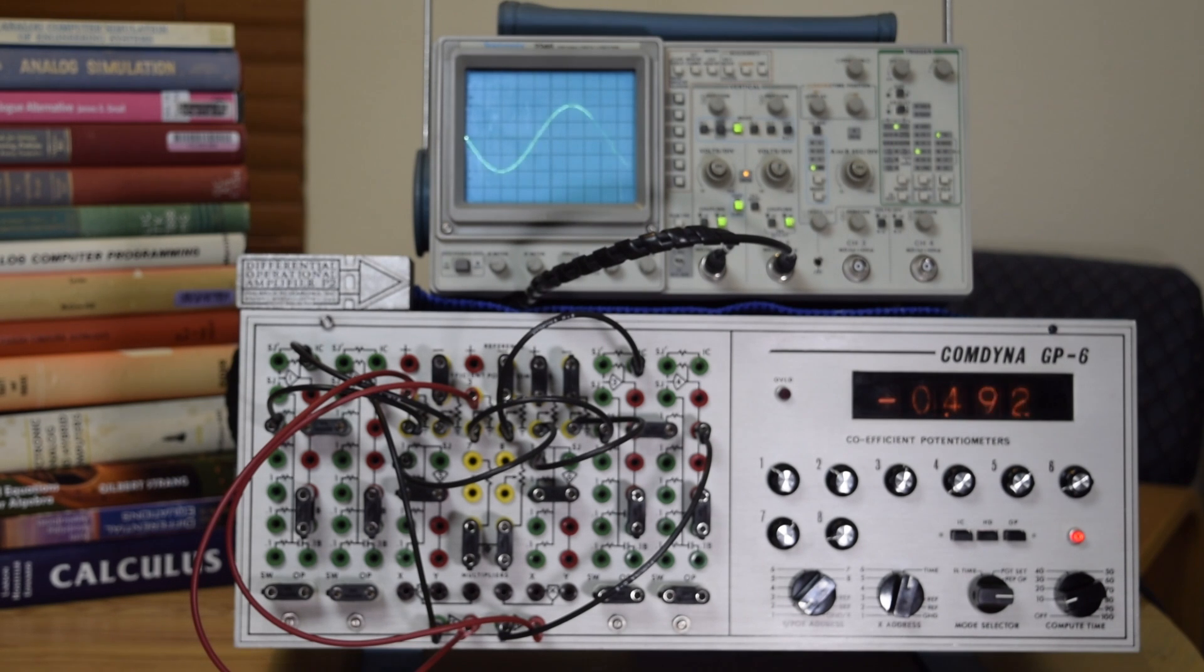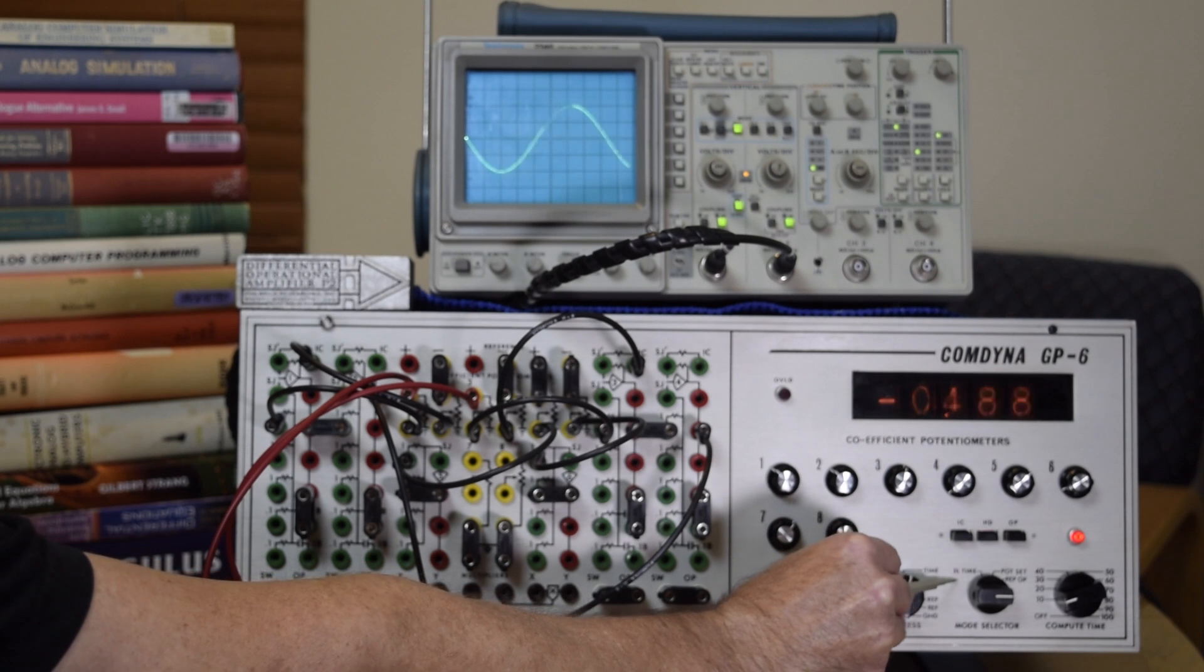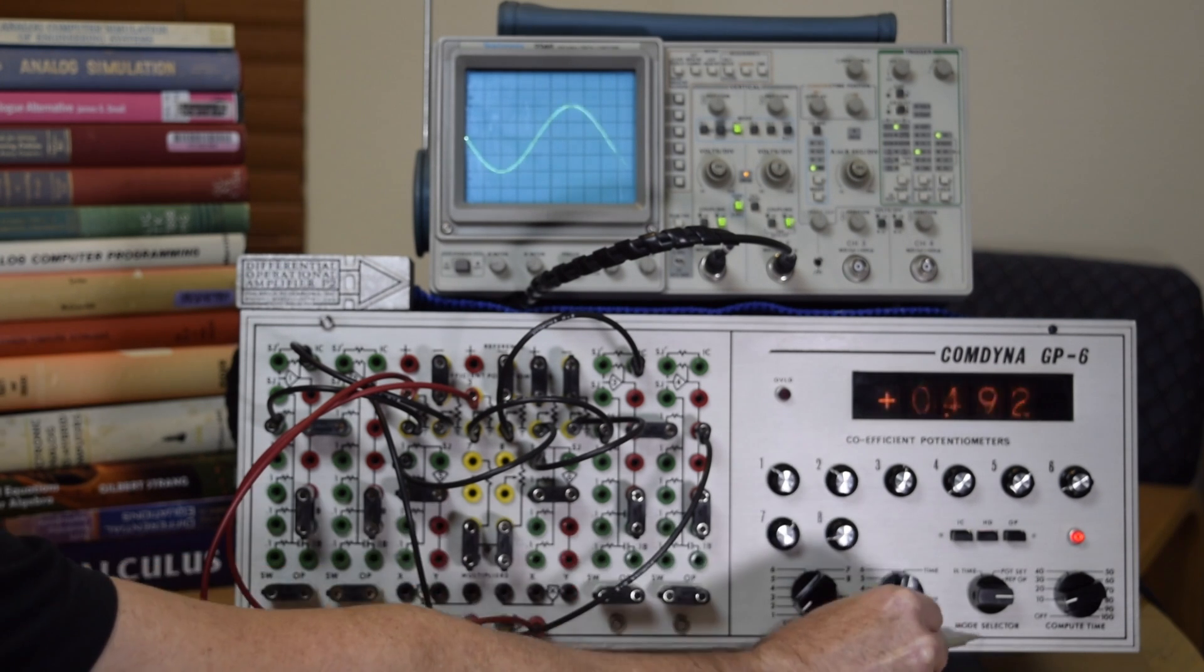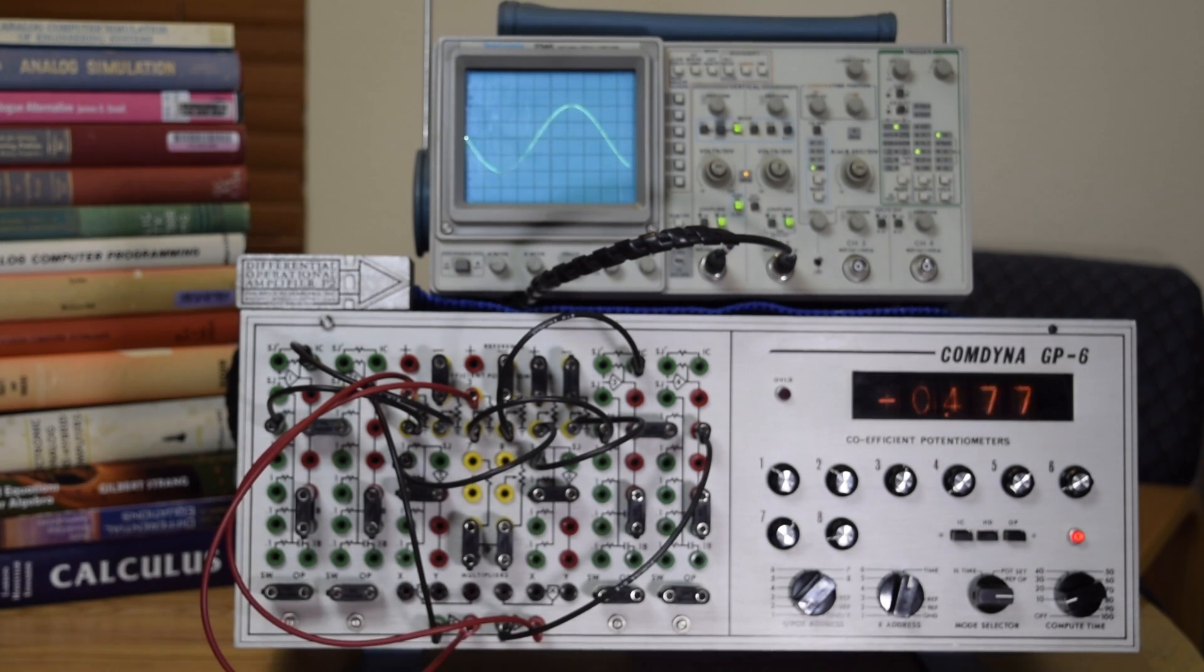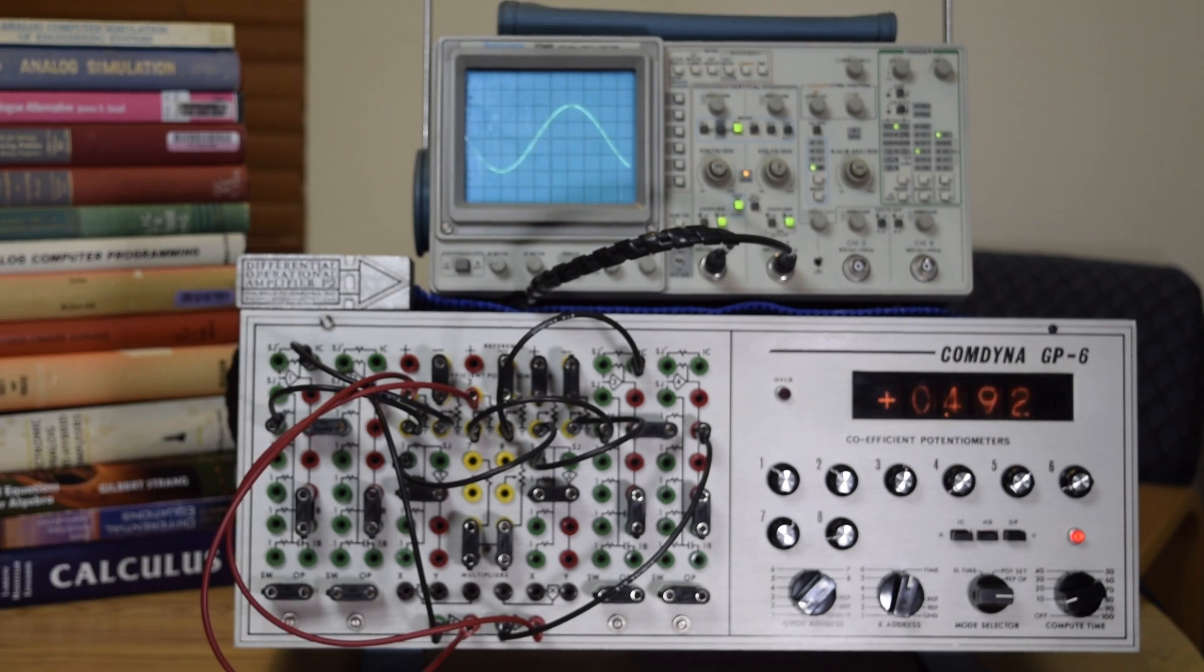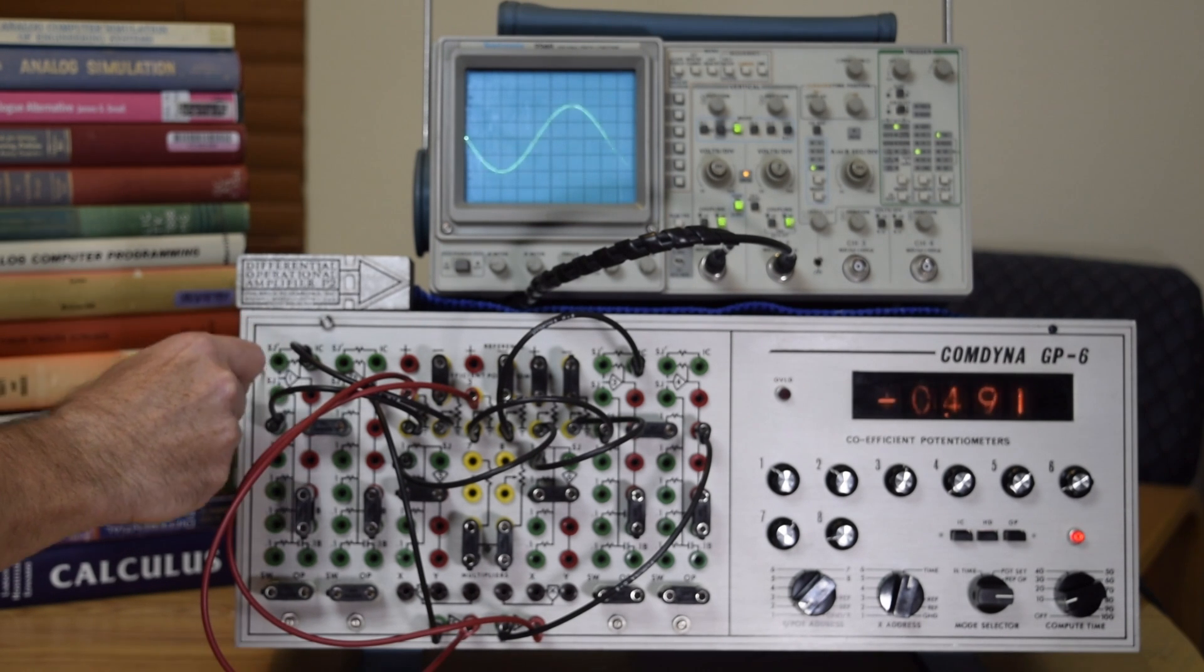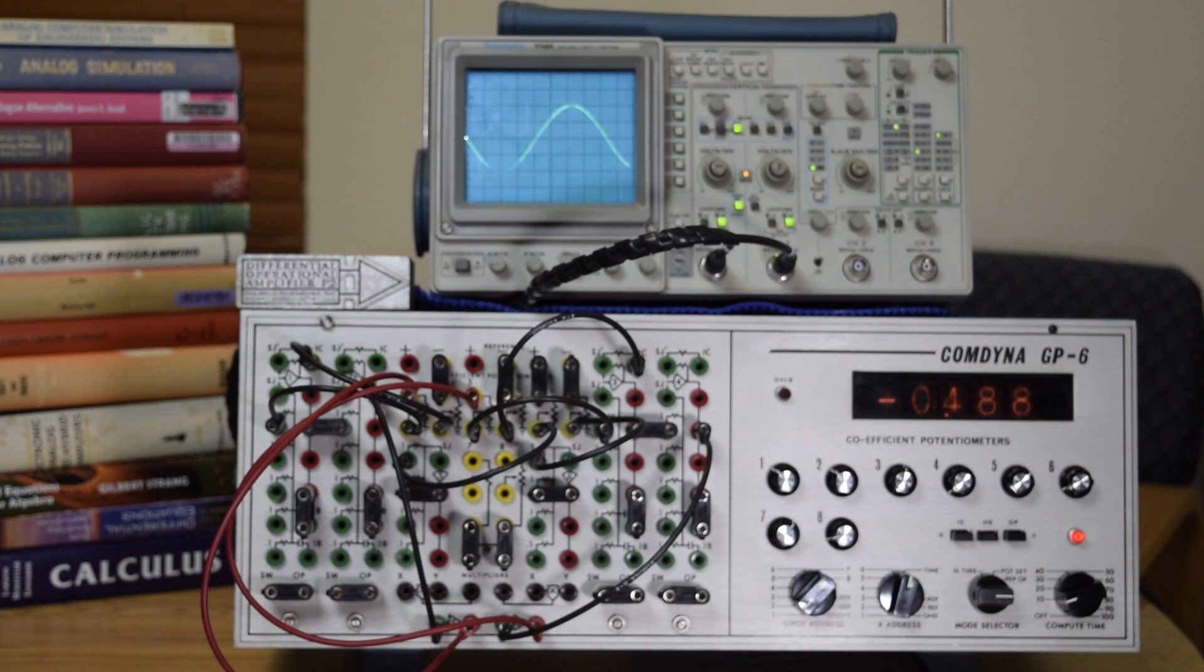One of the key differences, I guess in the later models, there was a switch added here for repetitive operation mode. And in this model, that would actually be selected via the mode selection switch. So right now it's actually running in repetitive operation mode. There's a minor change to the banana jacks here. In the later model, the summing junction jacks are gray to differentiate those from the inputs to the amplifier. That's pretty minor.